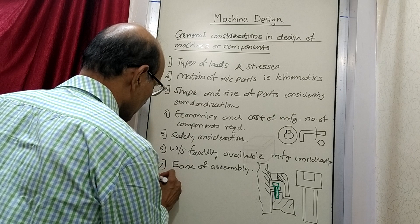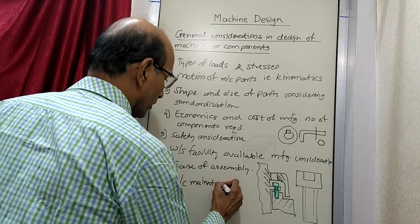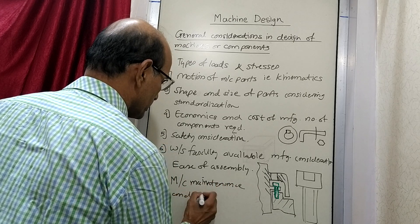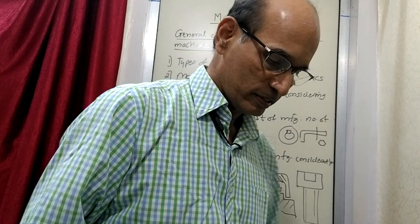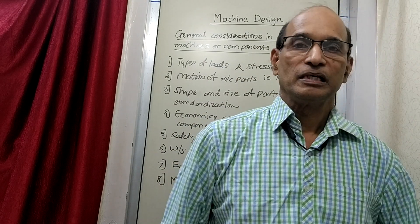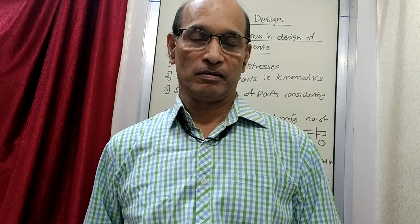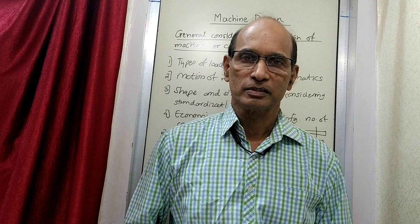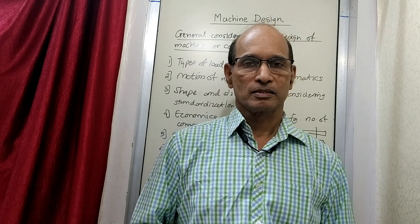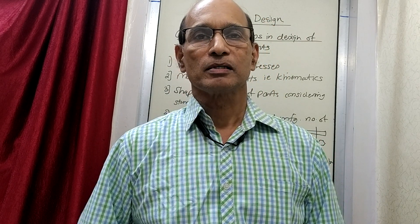The next consideration is machine maintenance and servicing. This is again a simple factor. Once you have a machine, it needs to be serviced and maintained. Certain maintenance activity is involved when the machine is performing on a regular basis — you have to provide some kind of oil, replace certain parts, etc. That is what is called servicing or maintenance.